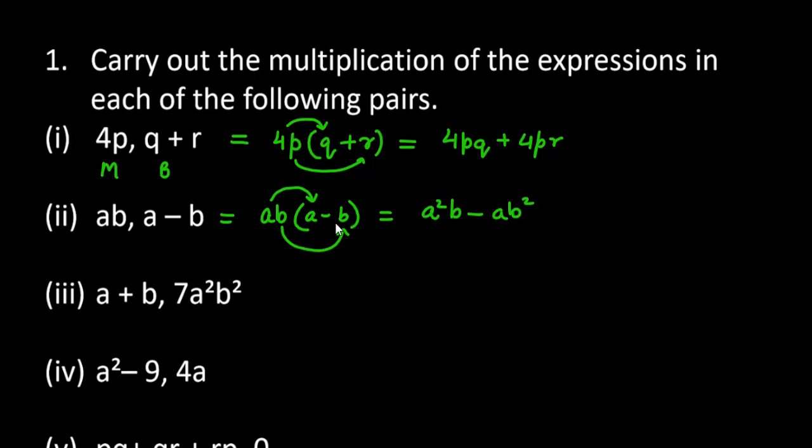Similarly, with the third one we have a plus b and we have monomial as 7a squared b squared. So we will multiply 7a squared b squared with a first, so it will be 7a cubed b squared. Then you have to multiply 7a squared b squared with b, the second term of the binomial, so it will be 7a squared b cubed.